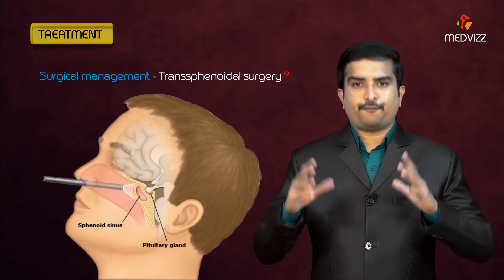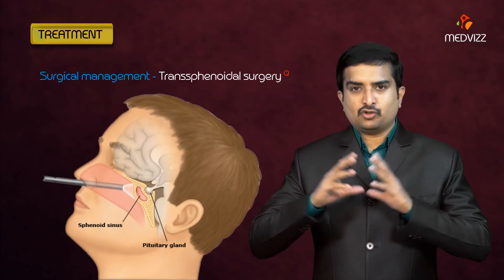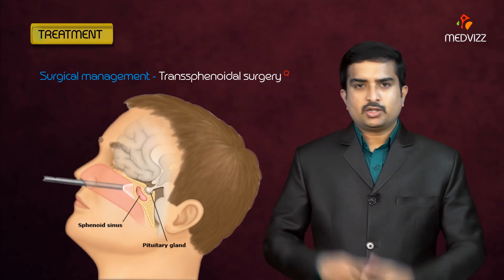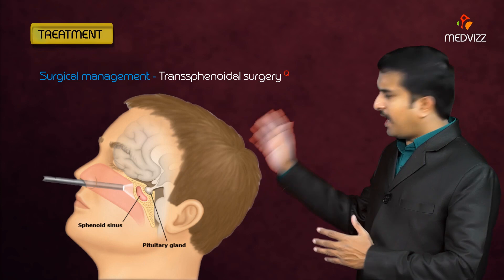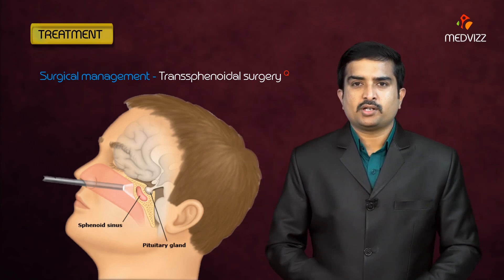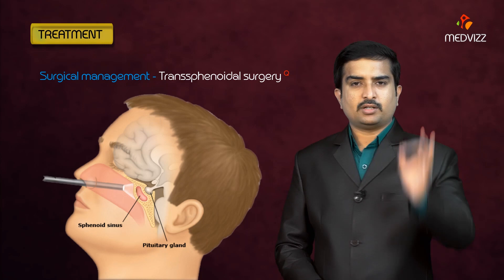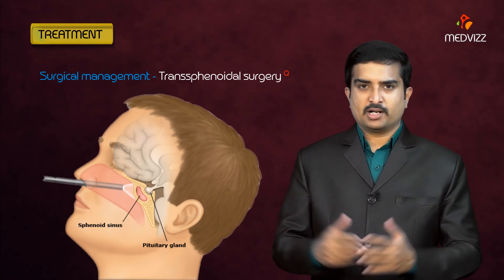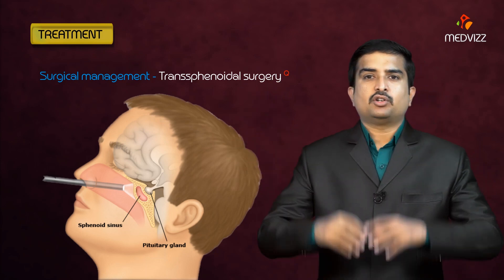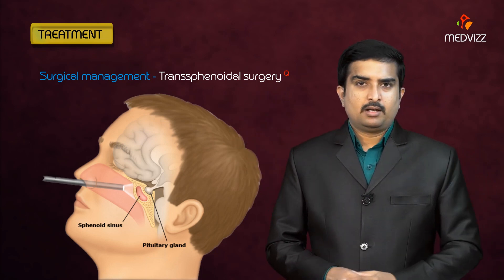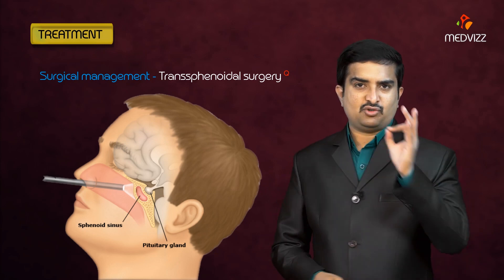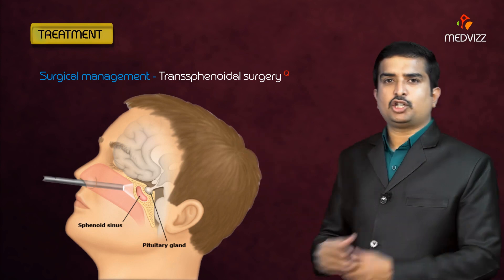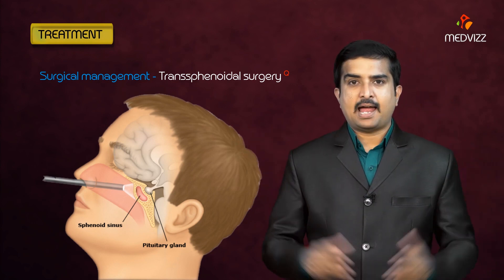Surgical management is the treatment of choice when medical management fails or is not indicated. Transsphenoidal surgery is the surgery of choice for both discrete pituitary microadenomas and macroadenomas. This concludes the topic of gigantism and acromegaly.